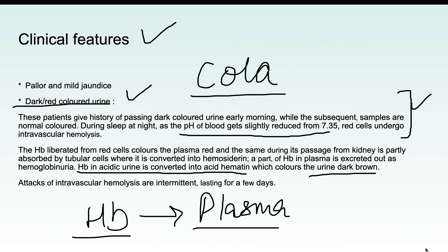When hemoglobin enters the kidneys, it is taken up by tubular cells and converted into hemosiderin. This leads to hemosiderinuria. This process was discussed in detail in the hemolytic anemia introduction video.